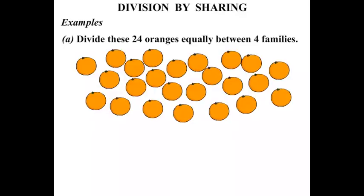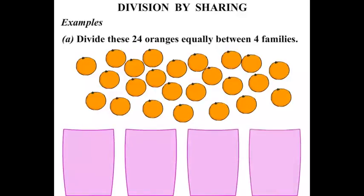Now between 4 families we are splitting them up. So 1, 2, 3, 4, 4 containers there. And let's see how many oranges go in each one. Now we are going to move 1 orange at a time.